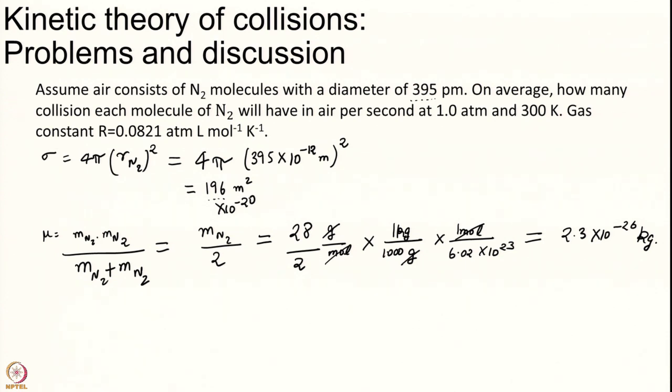When you keep on doing these calculations you will also get a sense of what are the numbers you expect to get. Mass is generally in the order of 10 to the power of minus 26 or 10 to the power of minus 27. This reaction cross section is generally in this order of 190 like 100 angstrom square. Get a sense of these numbers.